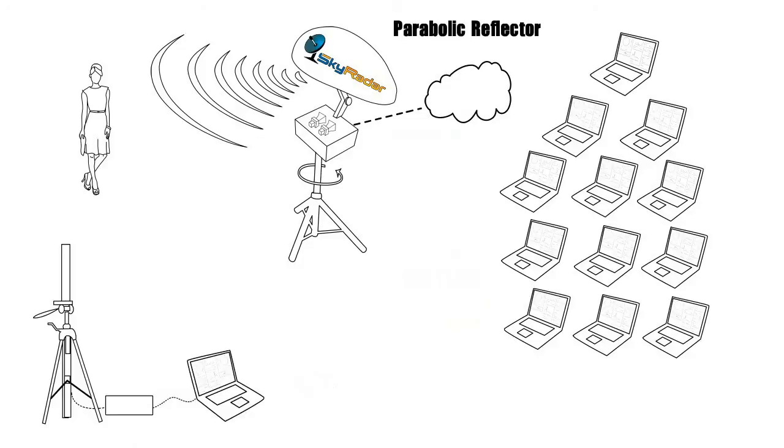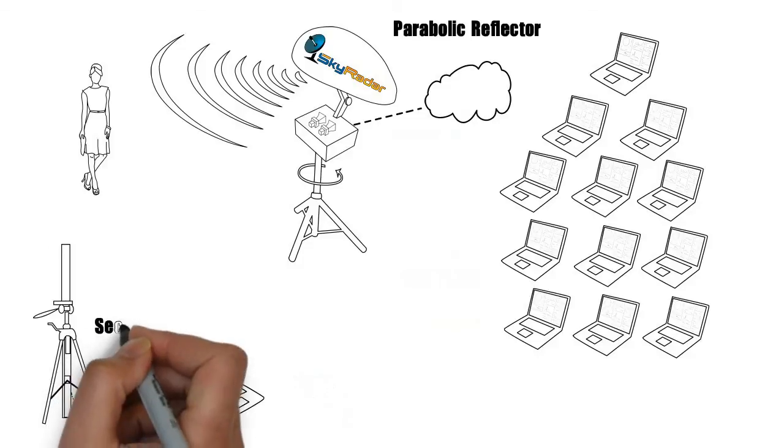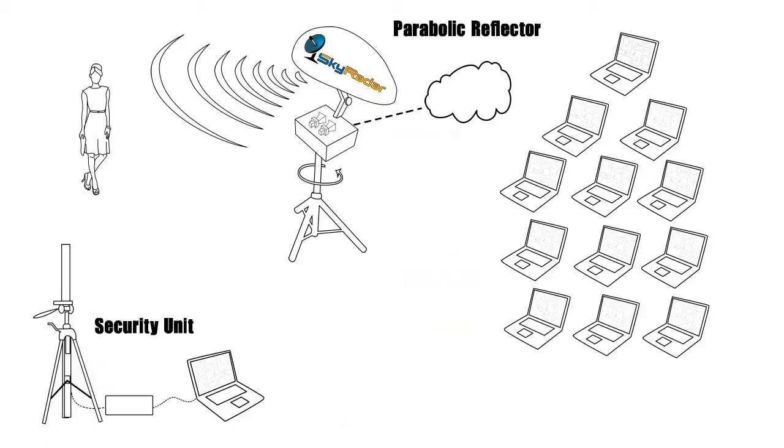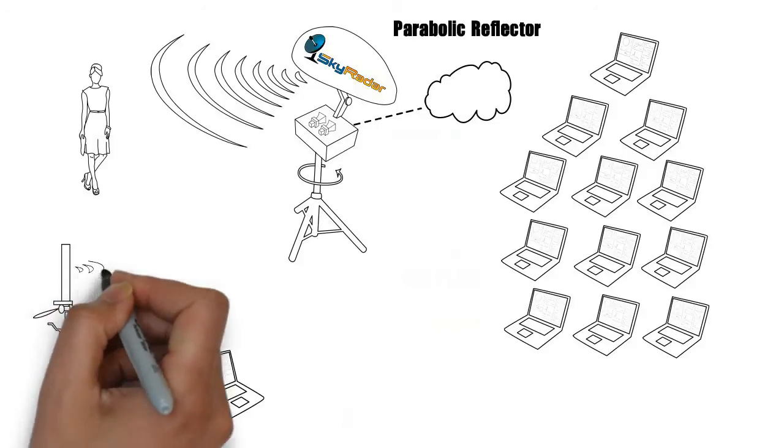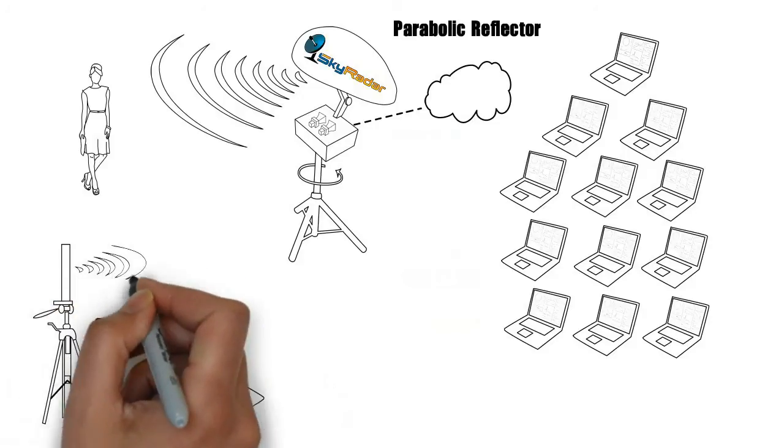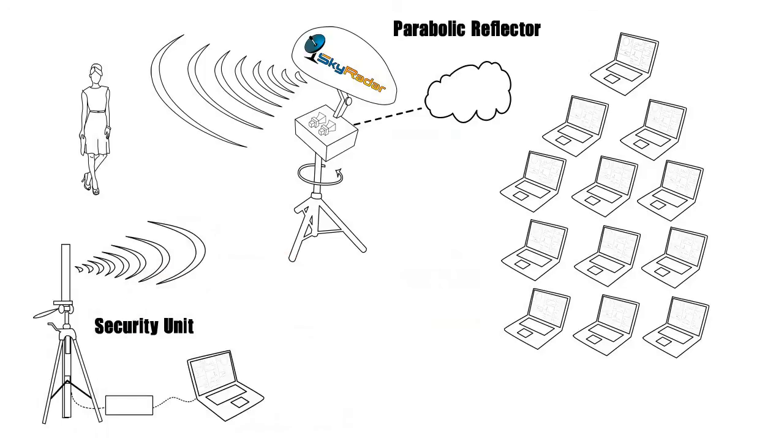You can also add SkyRadar's security unit to do computer-based jamming. With your SkyRadar FreeScopes, you then can practice electronic counter-counter measures to discriminate real objects from the fake ones.